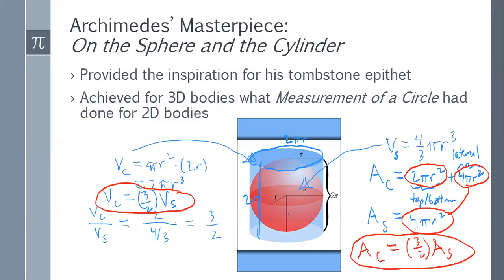Archimedes was obsessed with this fact — that both volume and surface area preserve this 3:2 relationship. That's why he insisted on having this engraved on his tombstone when he died. He considered this his crowning achievement. The area of a circle started all of this, using his method of exhaustion — approximating with circumscribed and inscribed polygons — and then everything else followed.